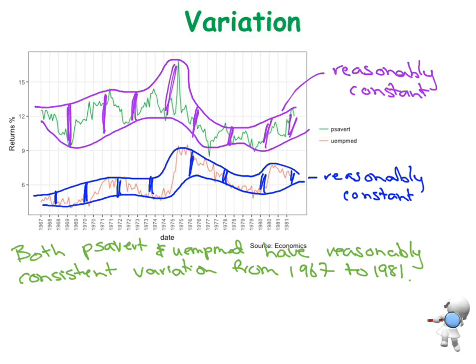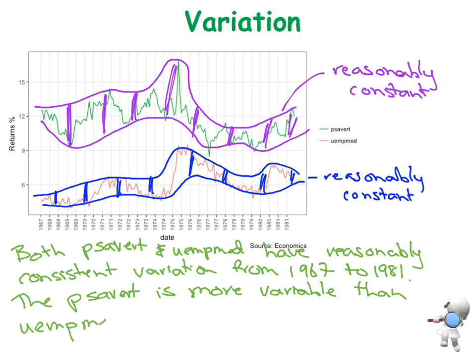There's less variation in the blue, whereas with the purple there's more variation going on. That's the comparison comment we want to make: the PSA BERT is more variable than the UEMPM, and there we are.